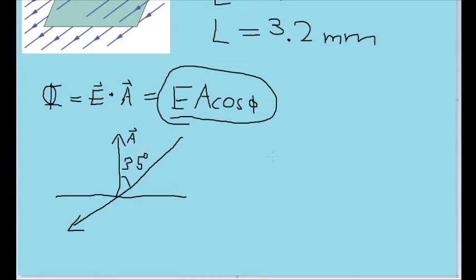However, the angle we're looking for, the angle that we'll actually want to put into the formula, is this angle right here, the angle between the directions that these two vectors, E and A, are actually pointing. This is the actual angle that we'll want to find and put into the formula.